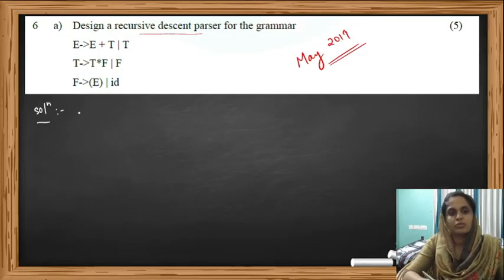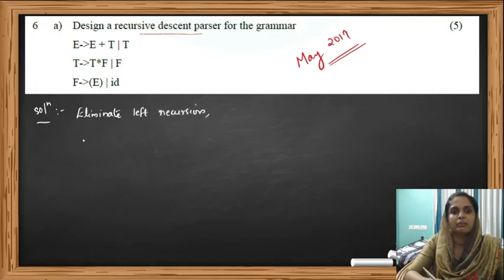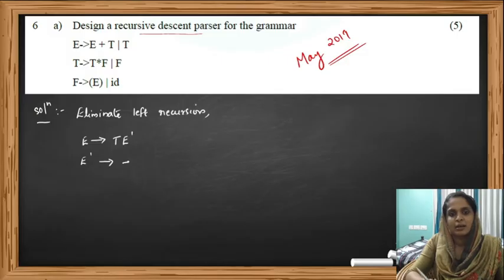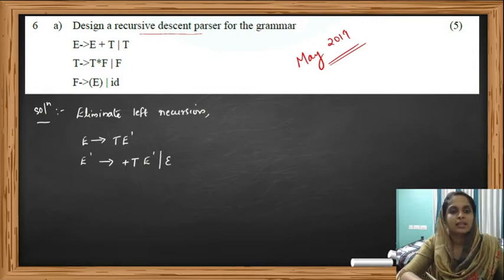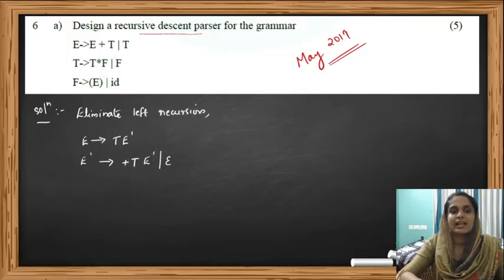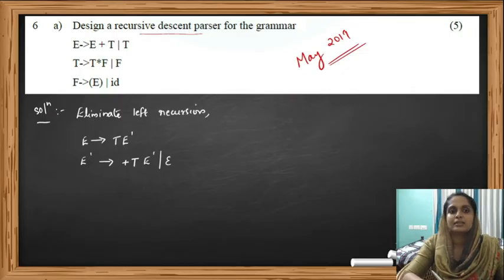The first step is to eliminate left recursion. The production E → E+T | T will become E → TE' and E' → +TE' | ε. Similarly, the second production T → T*F | F also contains left recursion, because the LHS is T and the RHS starts with T, just like the first production where LHS was E and RHS starts with E.